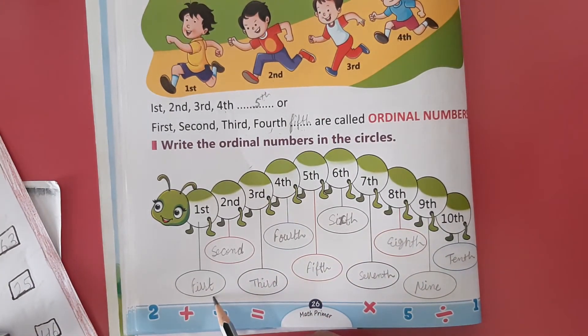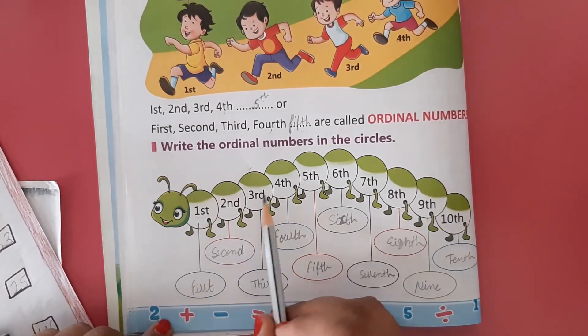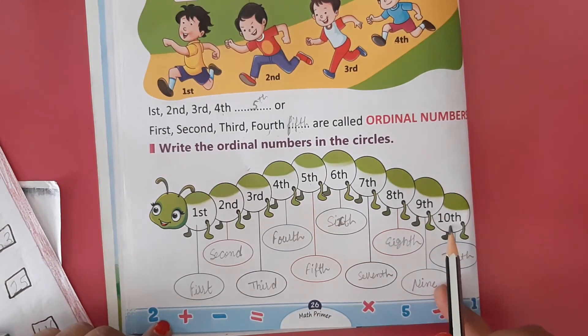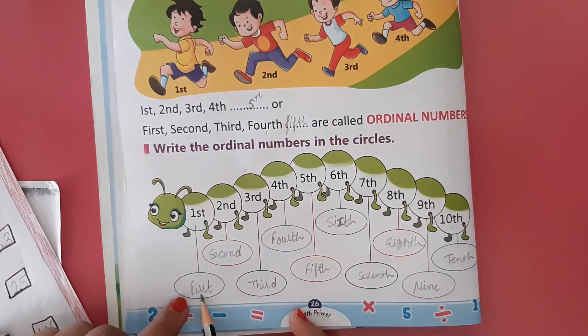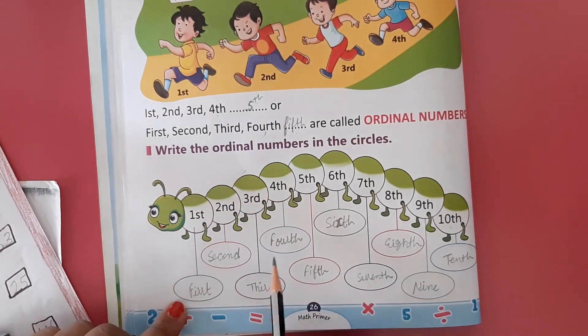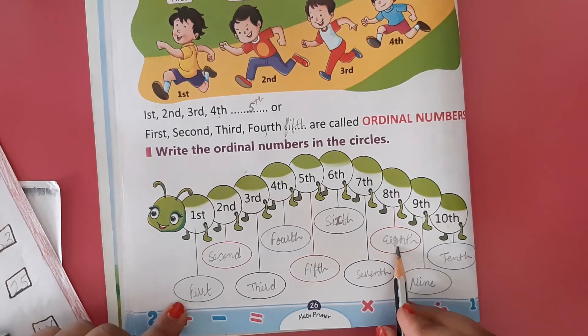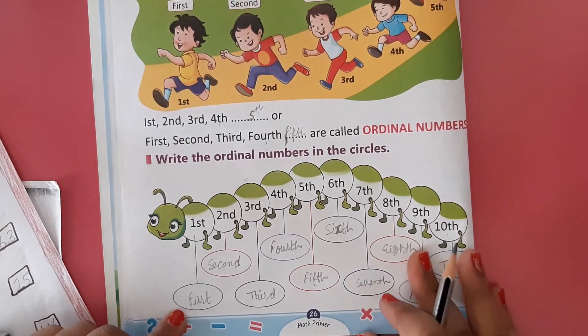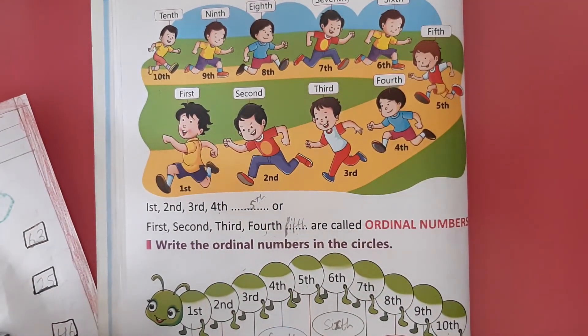Here the numbers are given: first, second, third, fourth, fifth, sixth, seventh, eighth, ninth, tenth. You have to write these number names.